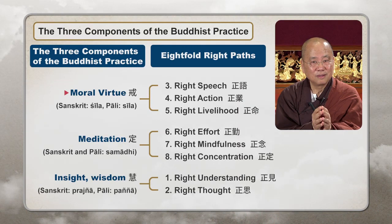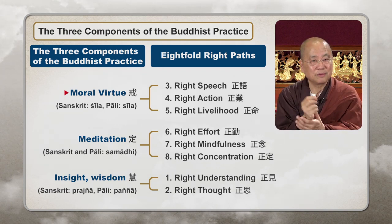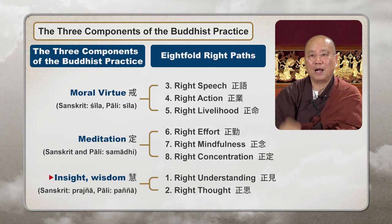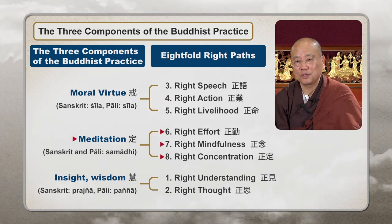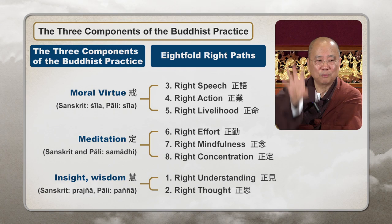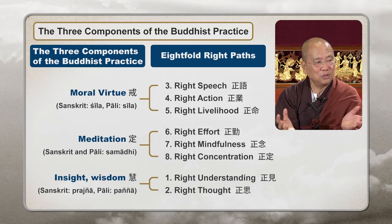The first step in meditation is you must have Sila — a high moral conduct. For a monk, for the first five years in a monastery you learn nothing but Sila — how to be morally virtuous, stopping all bad behavior and bad speech. The first requirement is moral standard; the second is concentration; the third is wisdom. All these have to be in the parameters of the Noble Eightfold Path: right speech, right action, right livelihood, right effort, right mindfulness, right concentration, right understanding, and right thought.